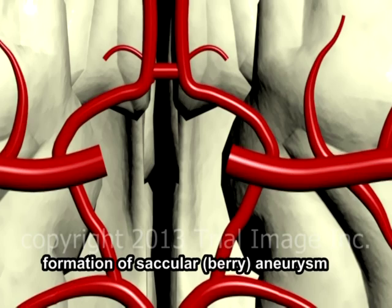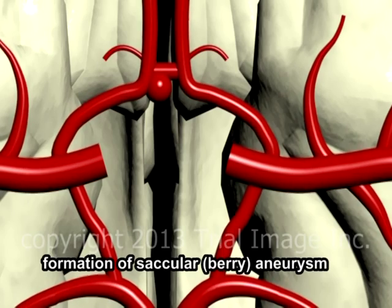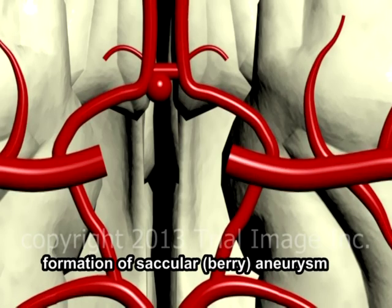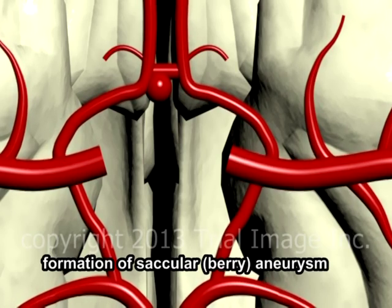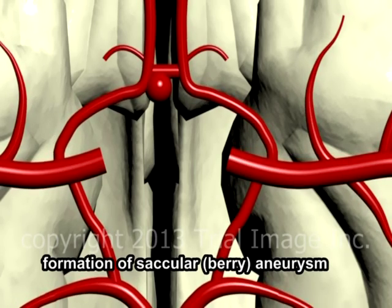Aneurysms form as a result of an acquired structural weakness in the blood vessel wall. Arteries which carry very high flows, such as those in the Circle of Willis, are thought to be particularly susceptible to mechanical damage in the vessel wall. Contributory factors, such as cigarette smoking or high blood pressure, may accelerate the process of damage to the vessel wall.